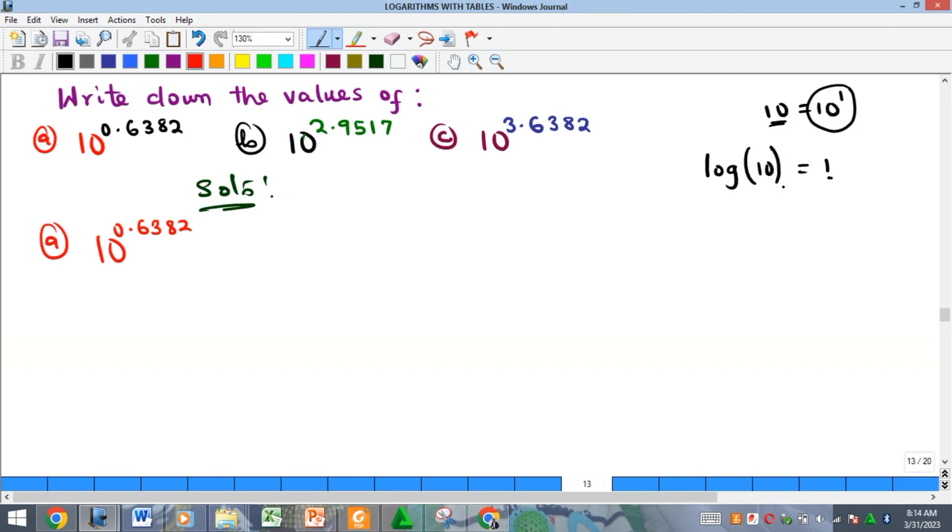How do you get back the number whose logarithm you took? You just take the antilog of the value you got after you took the logarithm of that number. So since if you take the log of 10 you will get one, if you want to get back 10 all you need to do is to take the antilog of that one. So in other words, if I want to find the value of 10 raised to power one, all I need to do is to get the antilog of one and I'll get back my 10.